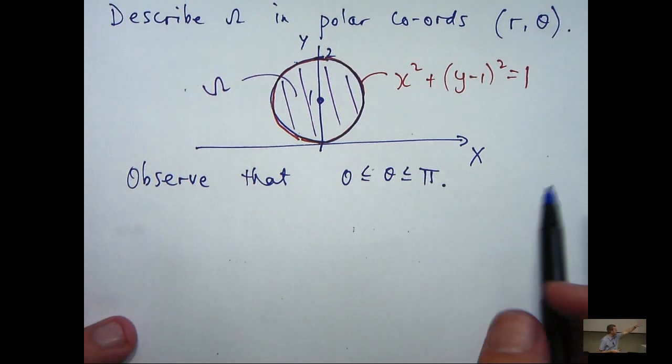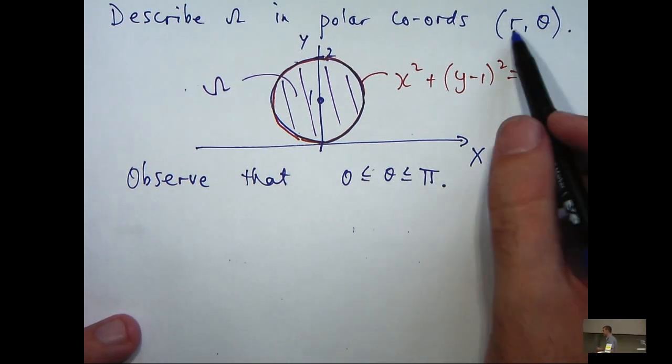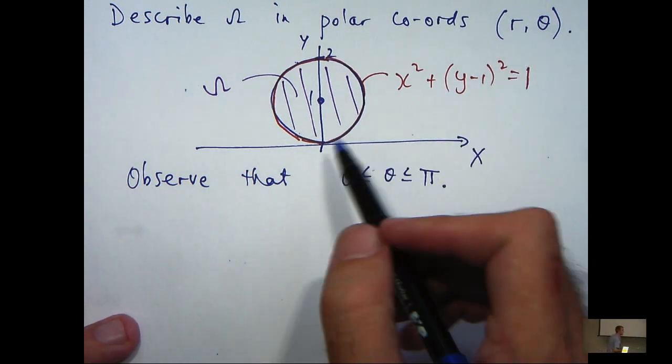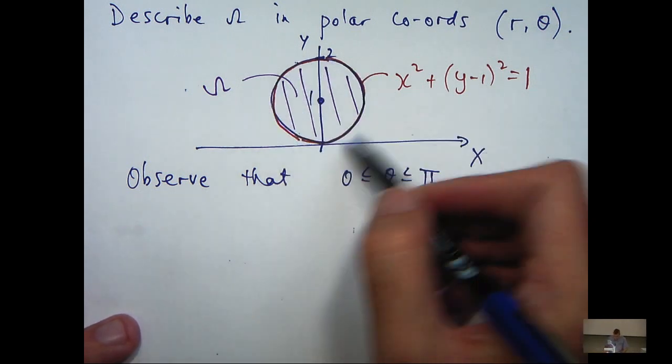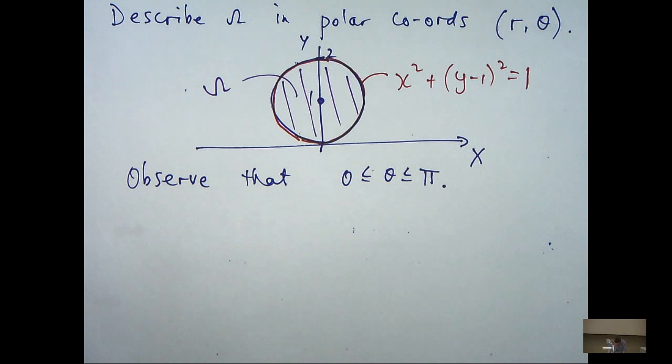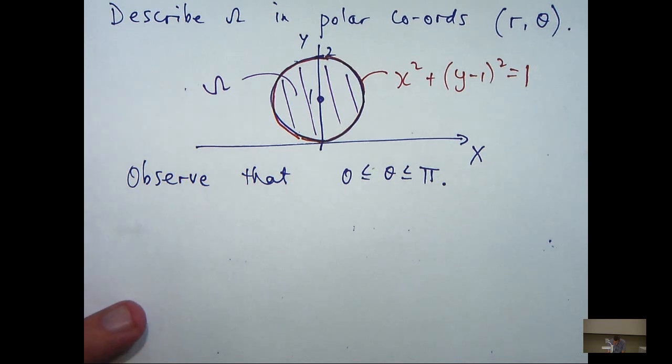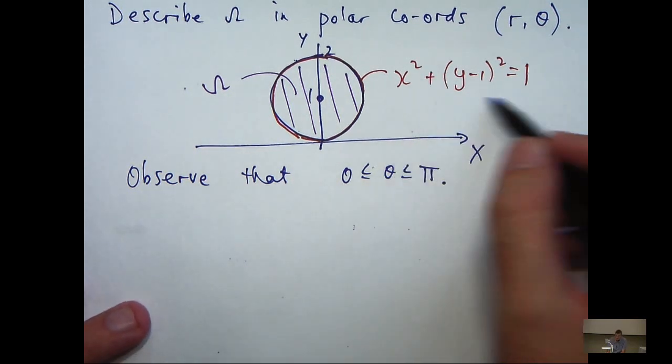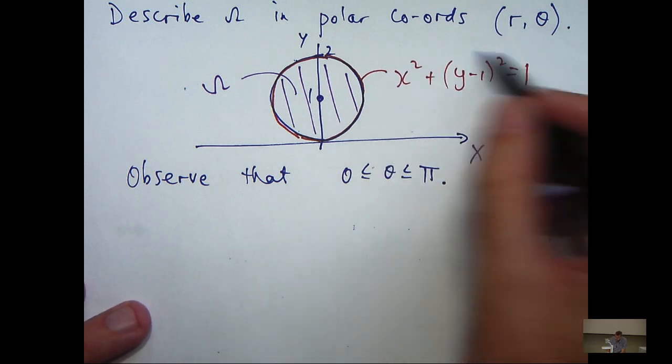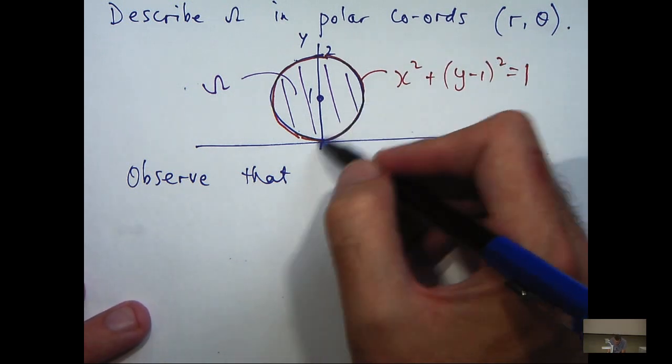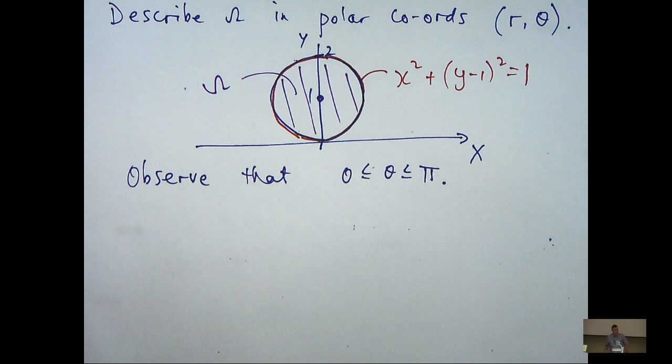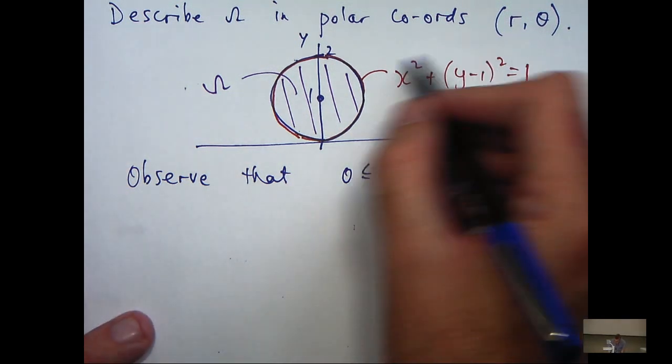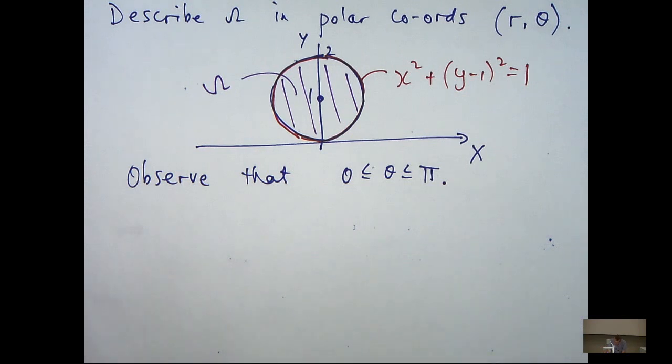So the bounds on theta will be 0 and pi because it's a half turn. Now, the more challenging upper and lower bounds involve the r. Obviously, r has to be greater than or equal to 0, but the upper bound on r is tricky. Some of you may look at this and go, well, r is between 0 and 2. Not true. It's more involved than that. So what I'm going to do is actually describe this circle using polar coordinates.